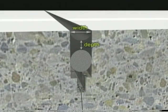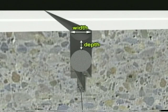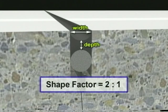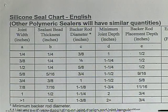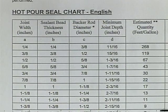The shape factor is the ratio of the width of the seal to the depth of the seal. For example, the recommended shape factor for tooled silicone sealant is 2 to 1. For a 5/8-inch wide joint, a silicone seal 5/16 of an inch deep is required. The sealant charts in the MnDOT concrete pavement repair specifications, together with the material manufacturer's recommendations, should always be followed.